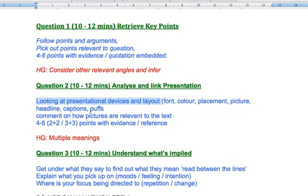So you'll be looking at the presentational devices and the layout and you're thinking there of font, colour, placement, picture, headline, captions, puffs. And you're going to comment on how pictures are relevant to the text. Again, you're looking for four to six points, two and two or three and three. I've split that up there because that's going to be maybe two and two from the headline and three and three from the picture and the article depending on how you want to break it down but you have to have your points with evidence and reference.